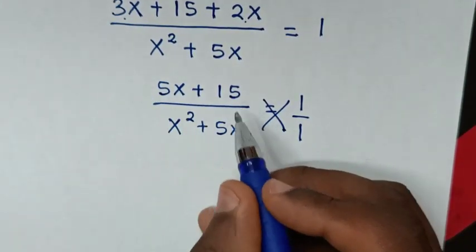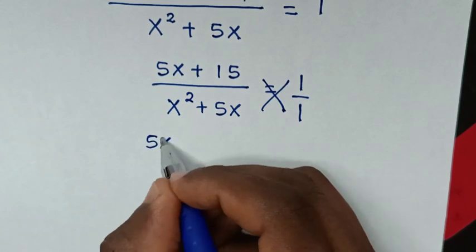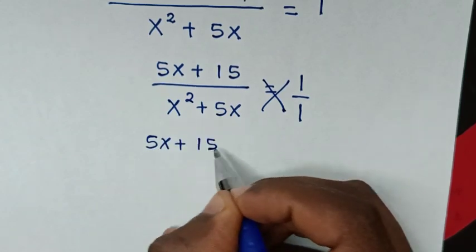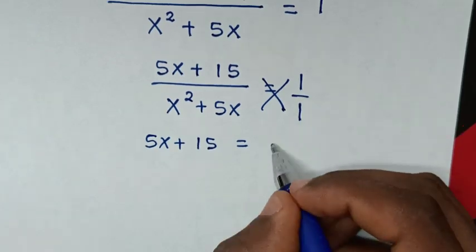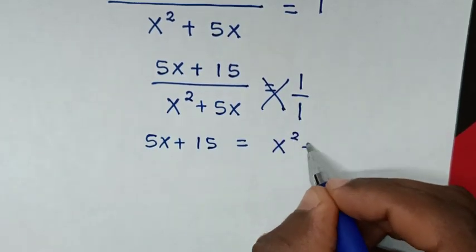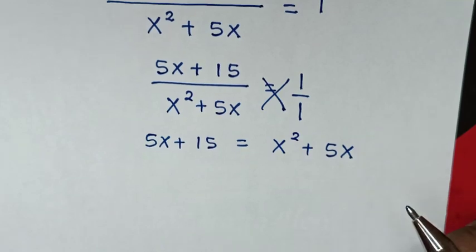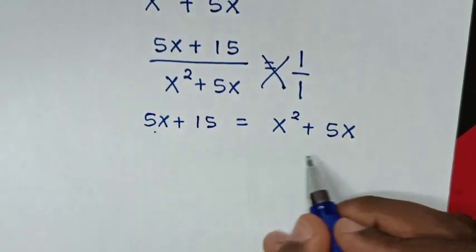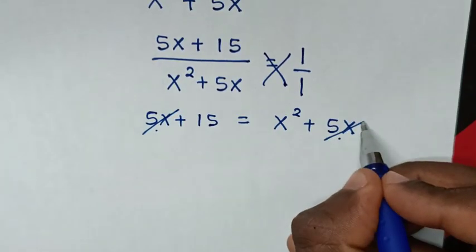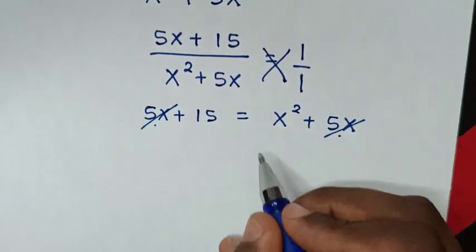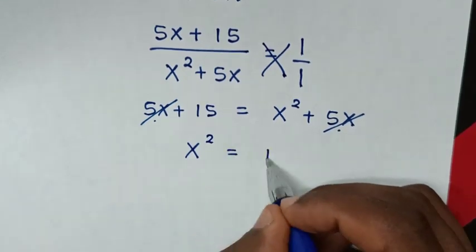So it will be 5x plus 15 is equal to x squared plus 5x. For the next step, there is 5x on this side and 5x on the other side, so 5x will cancel 5x. Then it will be x squared is equal to 15.